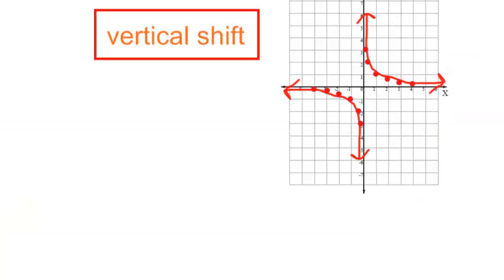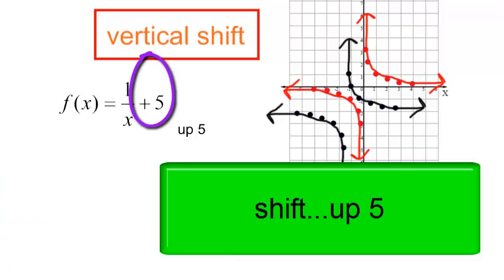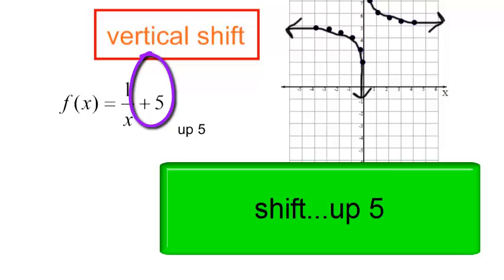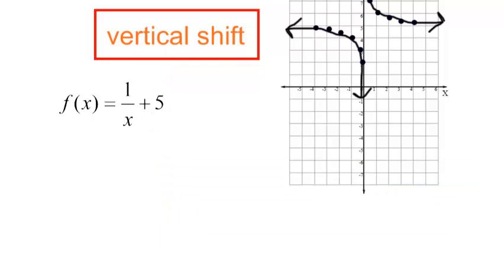Now let's talk about vertical shifts. Again, this is the graph f of x is equal to 1 over x. If I wanted you to sketch the graph of f of x is equal to 1 over x plus 5, this is a vertical shift. All this graph is going to do is go up 5 spaces, and that is the new graph f of x equals 1 over x plus 5.